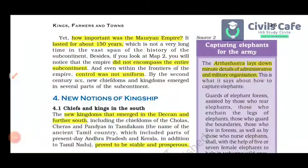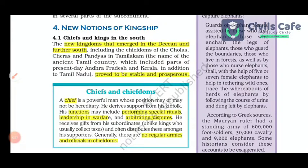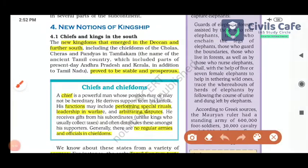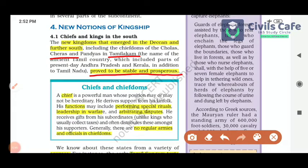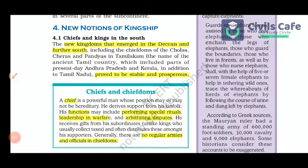New notions of kingship emerged in the south, for example in the chiefdoms of Chola, Chera and Pandya — together forming the Tamilaga, the ancient Tamil country. A chief is a powerful man whose position may or may not be hereditary; his functions include performing special rituals, leadership in warfare, and arbitrating disputes. There are no regular armies and officials in a chiefdom. His sources of wealth were gifts from subordinates, distributed among his supporters.